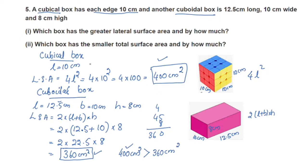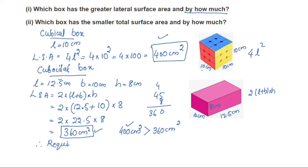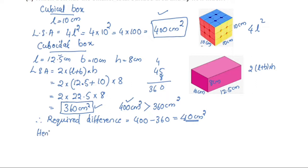The cubical box has the greater lateral surface area. The required difference is 400 minus 360 = 40 cm². So the cubical box has 40 cm² more lateral surface area.